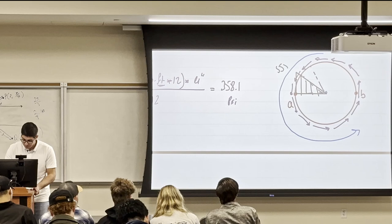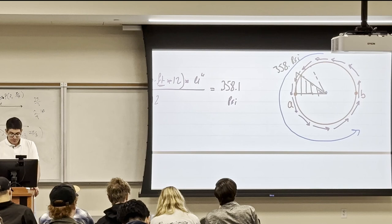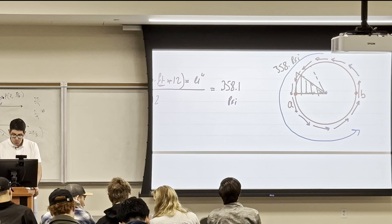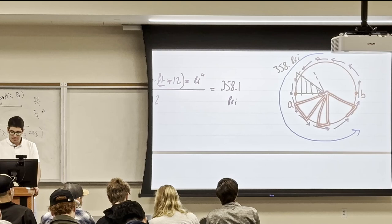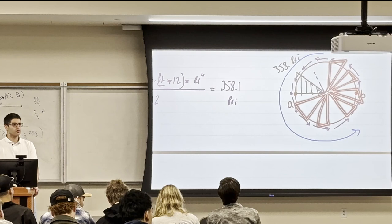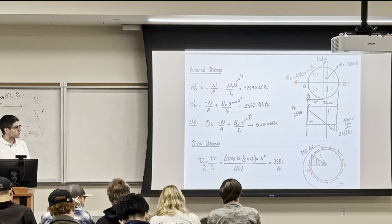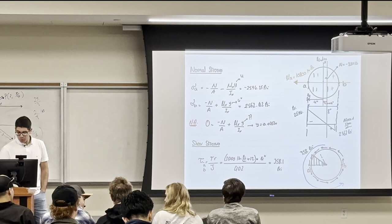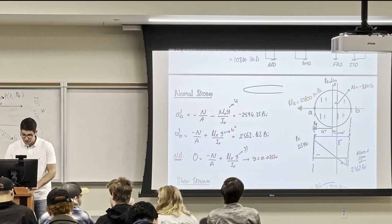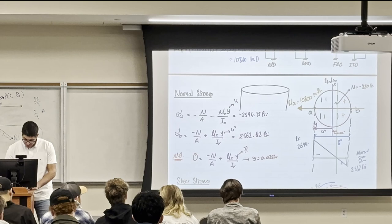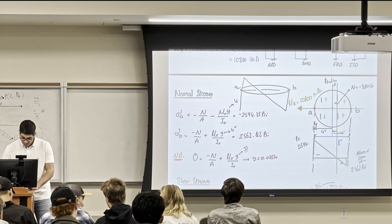This shear stress of 358 psi represents the stress distribution around the cross section — it would be the same at any point on the outer surface. There is no need to draw all of them; showing it at one point is enough.